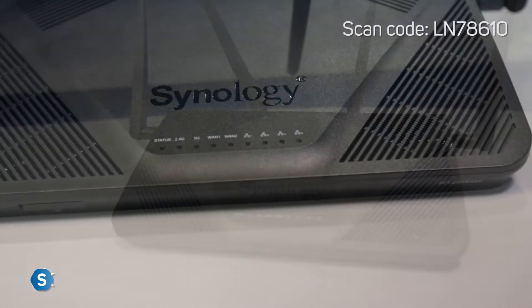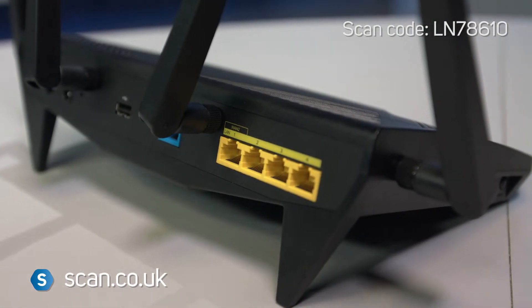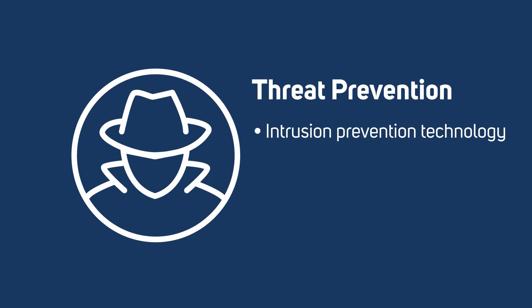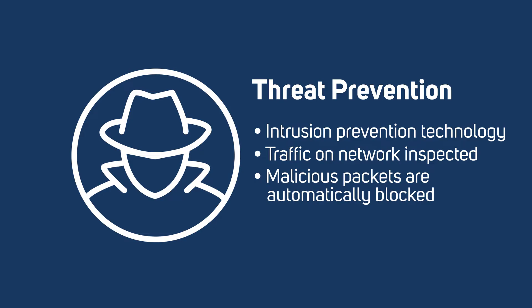For small offices looking for a powerful wireless router to control and secure their network, Synology's flagship RT2600AC model features important technologies — notably Threat Prevention and Safe Access — at an affordable price. Threat Prevention leverages intrusion prevention technology, meaning all incoming and outgoing traffic on your network is inspected and malicious packets are automatically blocked, all while retaining high internet speeds. You remain in full control and can define signatures, tweak the corresponding actions for your environment, and define whitelists for specific IPs in case of false alarms.